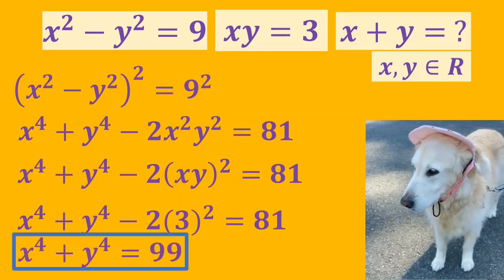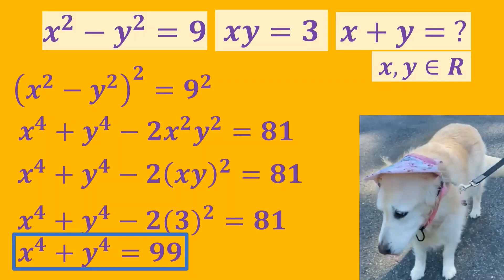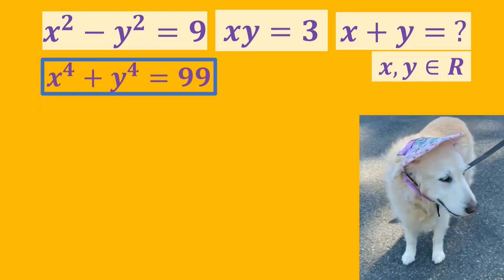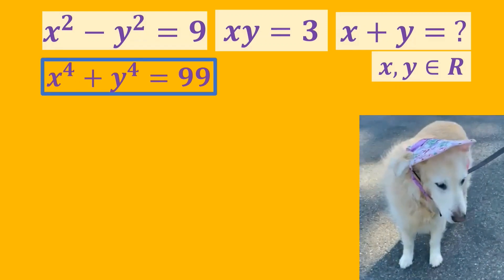As a result, x to the fourth power plus y to the fourth power equals 99. Now, we have another equation to use while solving the question.